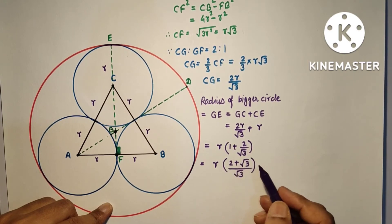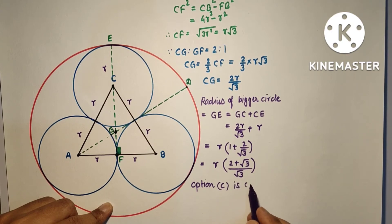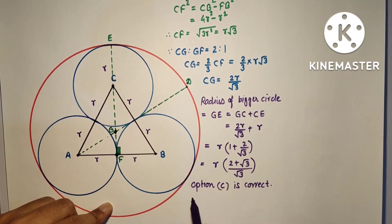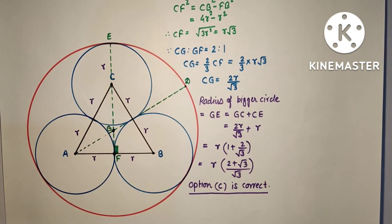So from the question, option C is correct, that third option. On the other hand, second method: if a circle is there and suppose there is this, and here is the circum circle.